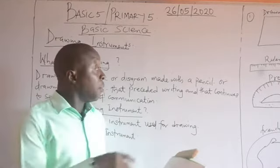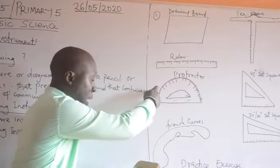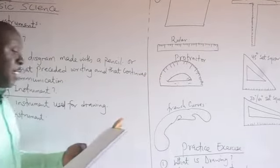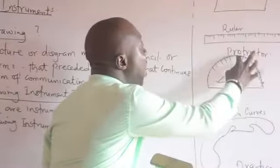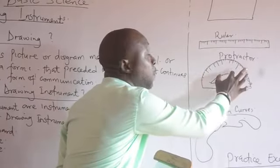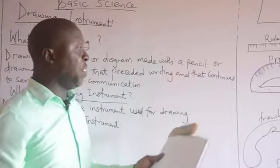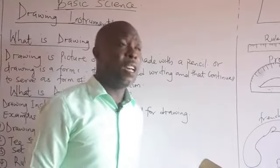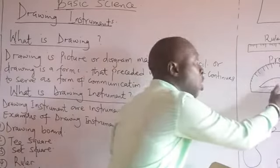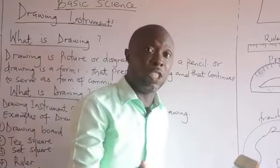A protractor is a transparent plastic material used to measure angles. We use a protractor to measure angles, and it is graduated in degrees ranging from 0 degrees to 180 degrees. Remember that angles are measured in degrees.